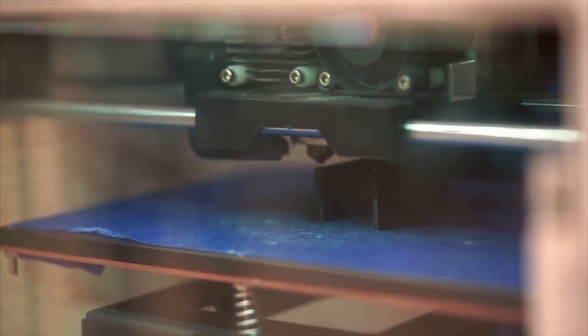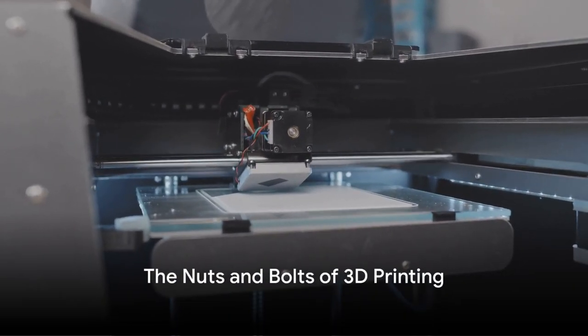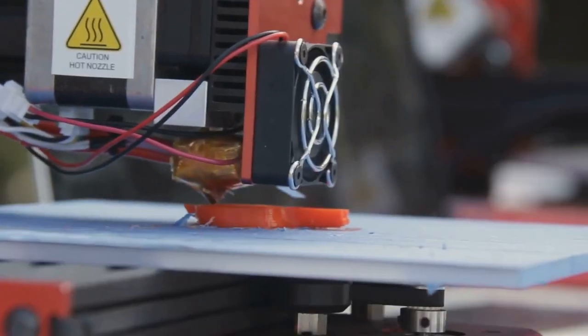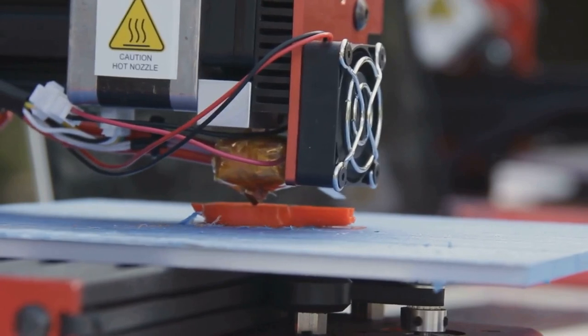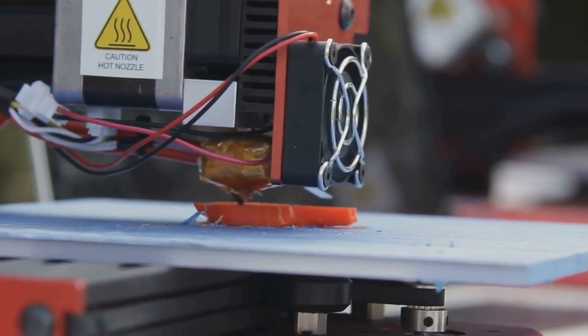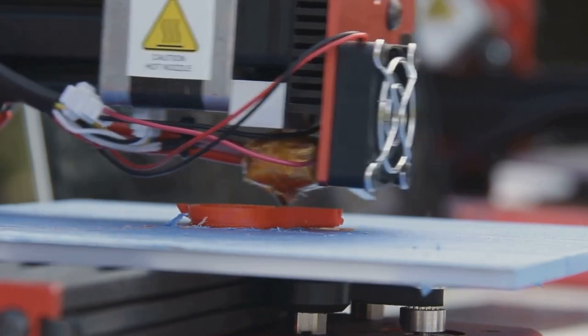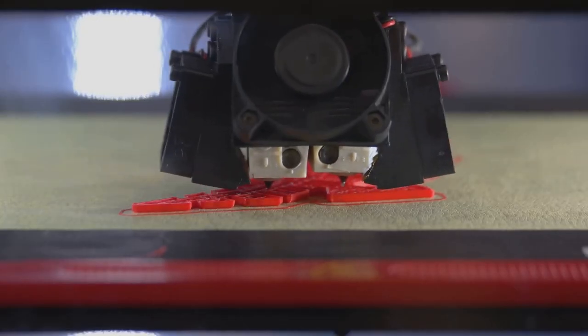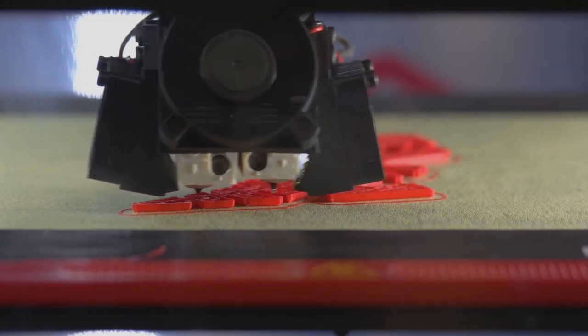So, what exactly is 3D printing and how does it work? Well, 3D printing, also known as additive manufacturing, is a process that transforms a digital model into a tangible object. This transformation happens layer by layer, making it possible to create complex geometries that would be challenging or even impossible with traditional manufacturing methods.